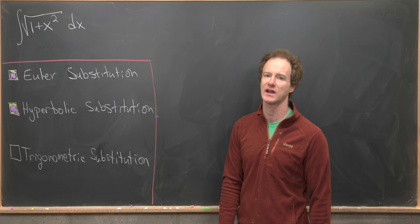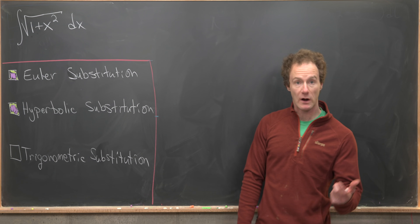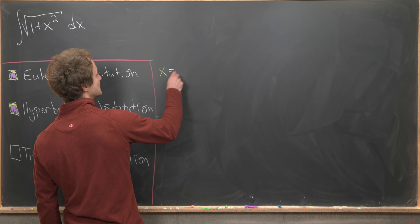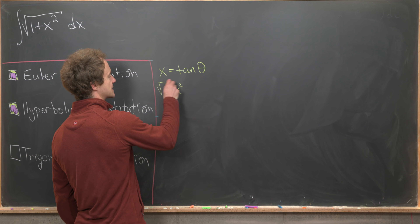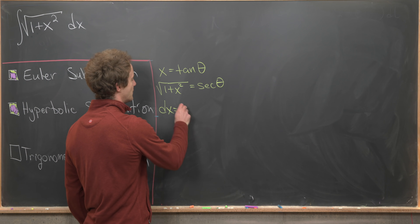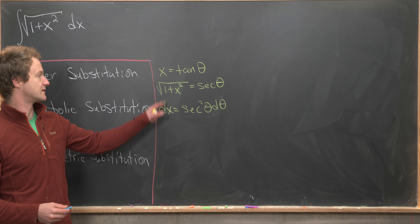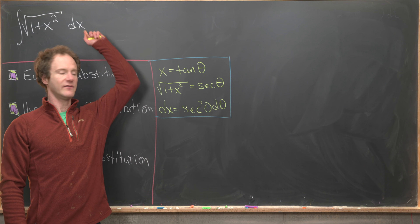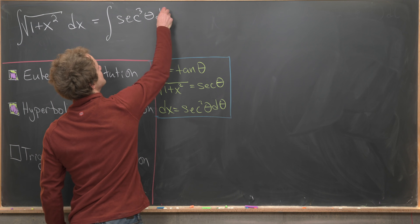Now for the third and last method: classic trigonometric substitution, the standard technique taught in calculus 2. For the square root of 1 plus x squared, we substitute x equal to tan(θ). Then √(1+x²) equals sec(θ) by trig identities, and dx equals sec²(θ) dθ. The integral becomes the integral of sec³(θ) dθ.